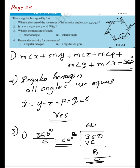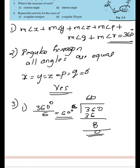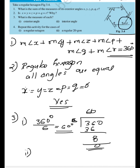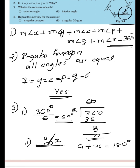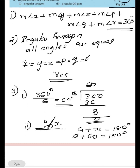Now for part b: what is the measure of the interior angle? To get the interior angle, since angle a and angle x form a linear pair, a + x = 180 degrees. We already found that each exterior angle x = 60 degrees. So a + 60 = 180 degrees.